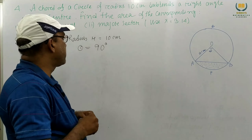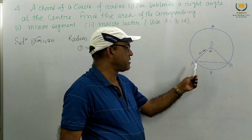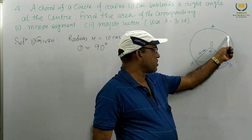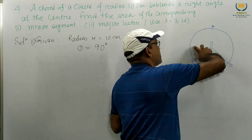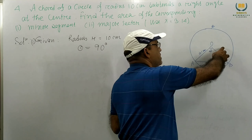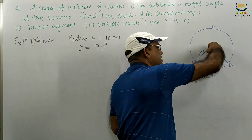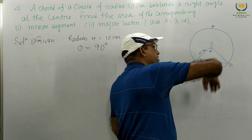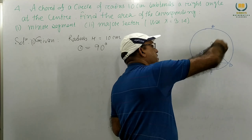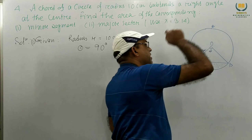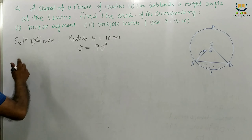Number 2 is the major sector. The major sector means this larger portion we have to find. If we consider the whole area of the circle minus the minor sector, then we get the major sector.